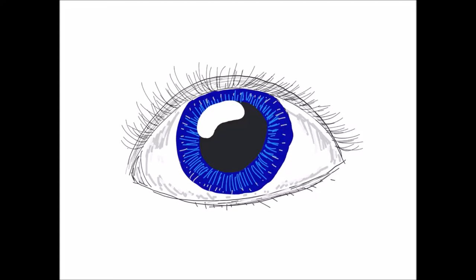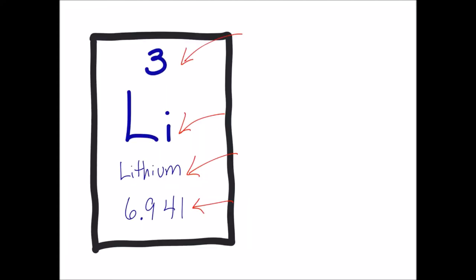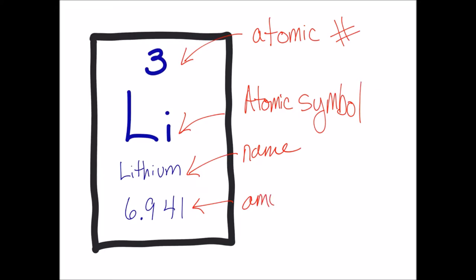Let's look at one element on the Periodic Table. Lithium, the 3 is the atomic number. The Li is the atomic symbol. Let's be honest, sometimes it's a lot easier to write one or two letters than it is to write out an entire word. The element name is included, and the Atomic Mass Unit, or AMU.